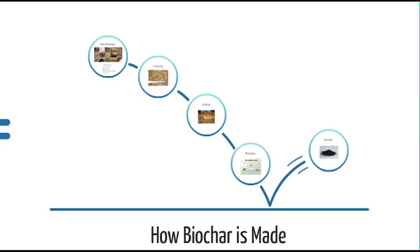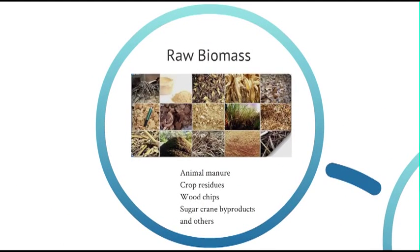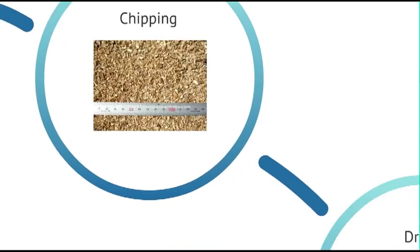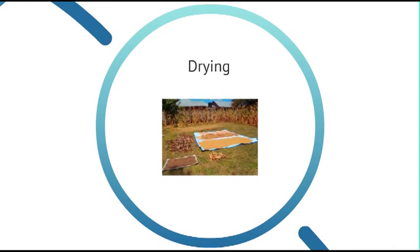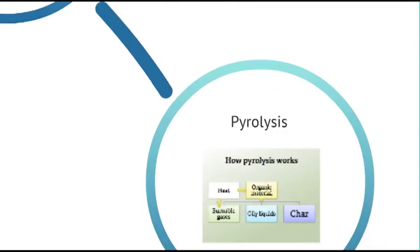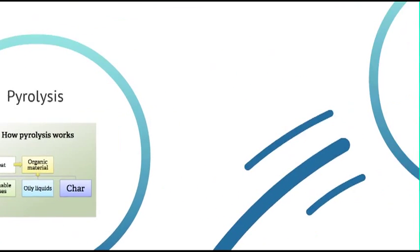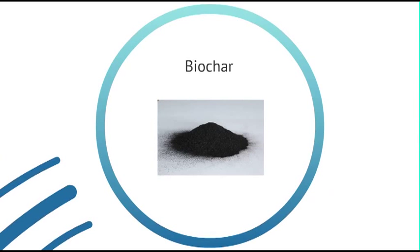Biochar can be made from different feedstocks such as animal manure, crop residue, wood chips, sugarcane by-products, and others. The feedstock is then chipped and dried. Heating is applied in a container which restricts oxygen from entering. This process is called pyrolysis, which is a thermal decomposition of biomass. All these components make biochar.